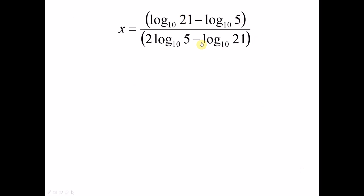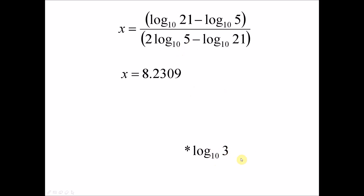After gathering all the terms without the unknown x, you just key it into the calculator — log base 10 of 21 minus log base 10 of 5, remembering to use brackets. You may pause this video and try using the calculator to see if you get the same answer, which is 8.2309. One thing to note: when you read from the textbook, sometimes they don't write log base 10 explicitly. They simplify log base 10 of 3 as just 'log 3', which means log base 10 of 3.